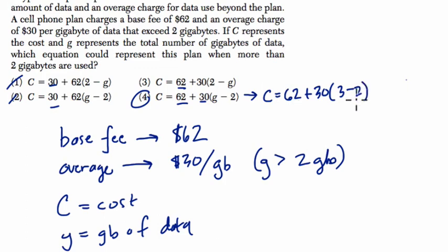Which makes sense that we would use, we've used 1 gigabyte beyond the 2, so it's 30 times 1. So it's $30 extra for that 1 gigabyte, and that would be $92. You can try it for other numbers here, and that's the only one that works.